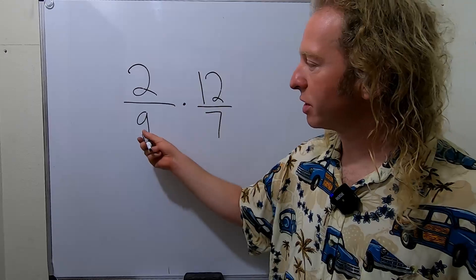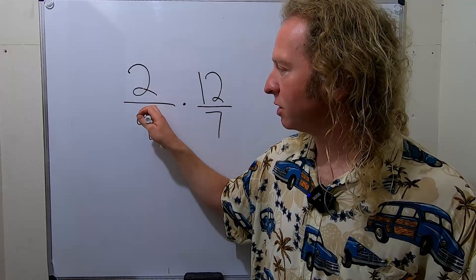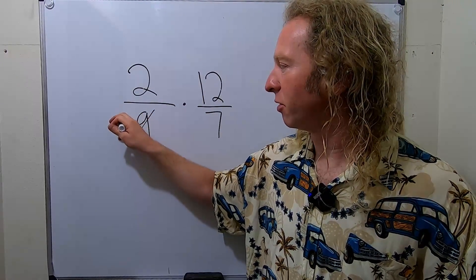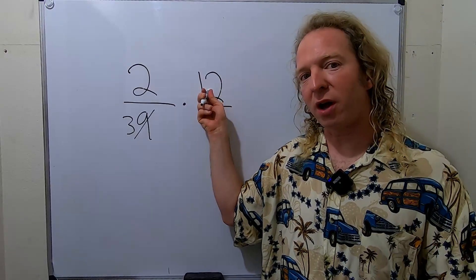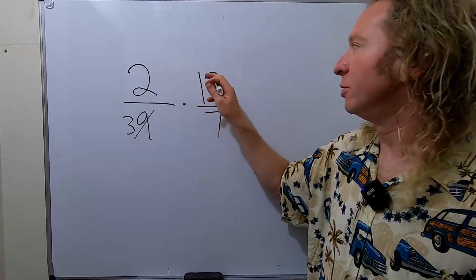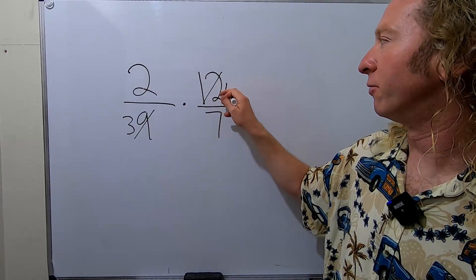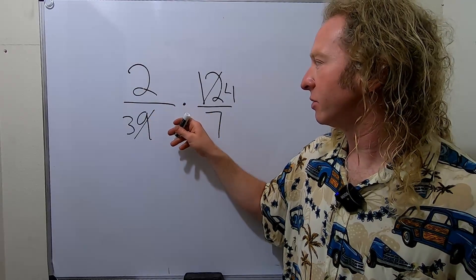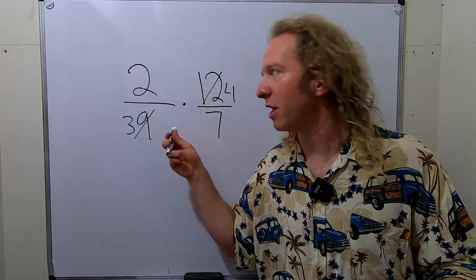So 3 goes into 9 three times. So what you do is you put a line here, and then you put 3. And then 3 goes into 12 four times. So you put a line here, and you put a 4. So you can rewrite this, or just do the math now. Let's just do the math now.